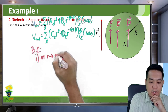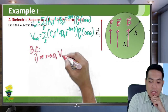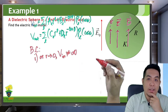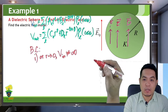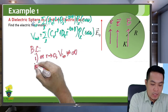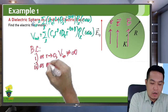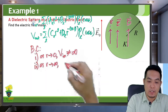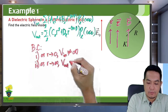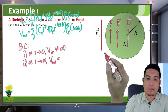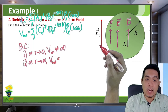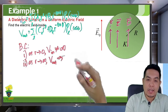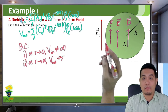As R approaches 0, the potential inside must be finite. As R approaches infinity, since there is an electric field outside, the potential will approach negative E₀ dot dL. In spherical coordinates dL is dR, so the dot product E₀ dot dR is E₀ dR cosθ, and integrating gives E₀ R cosθ, where E₀ is the magnitude of the external electric field.